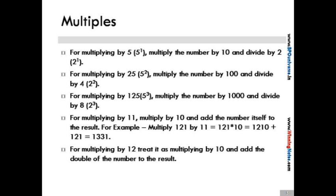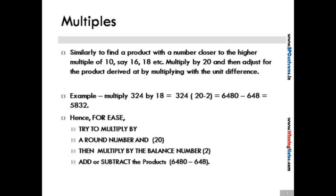For multiplying by 11, we can multiply the number by 10 and add the number itself to the result. Similarly, for multiplying by 12, we can multiply by 10 and add the double of the number to the result.